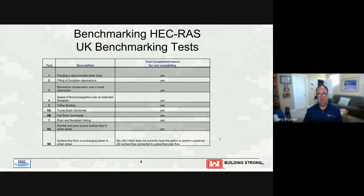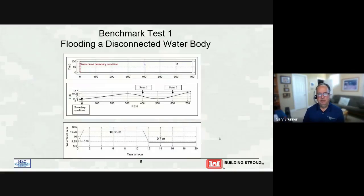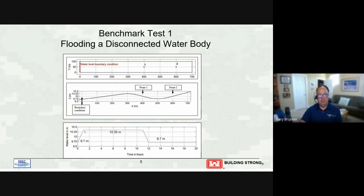The first test was very simple: you have a terrain that slopes up and then back down, and you have a boundary condition to the left which is a stage hydrograph going from 9.75 to 10.35 meters, which is high enough to get over this hill at 10.25 meters. So you increase the water level quickly, hold it at 10.35, and then bring it back down, to see what happens to the water going up and how much goes over the hill and ends up on the right-hand side.